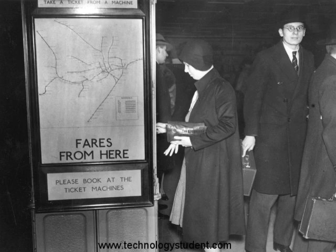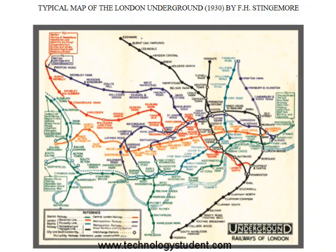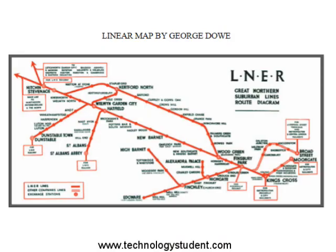Maps of the underground were usually geographic representations, although there were attempts by map designers to simplify the route maps, as seen in the 1930s map seen on the screen. But even these were difficult to read and follow, especially as the underground network expanded during the 1920s.